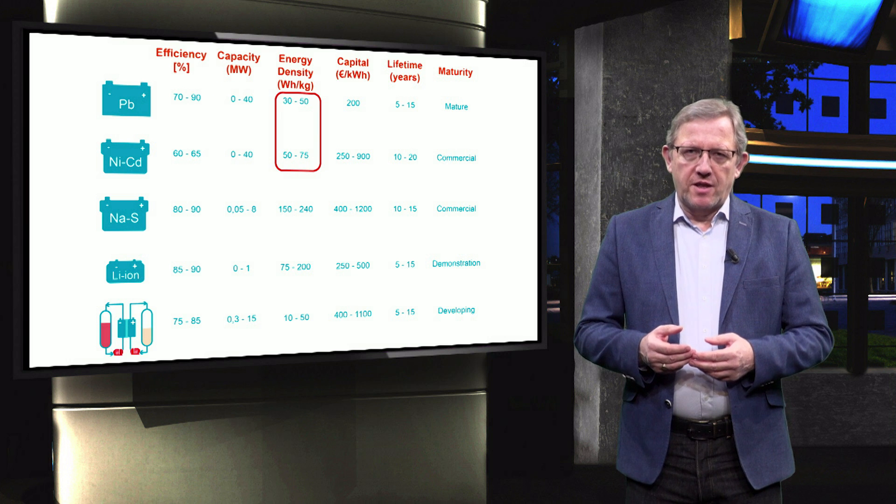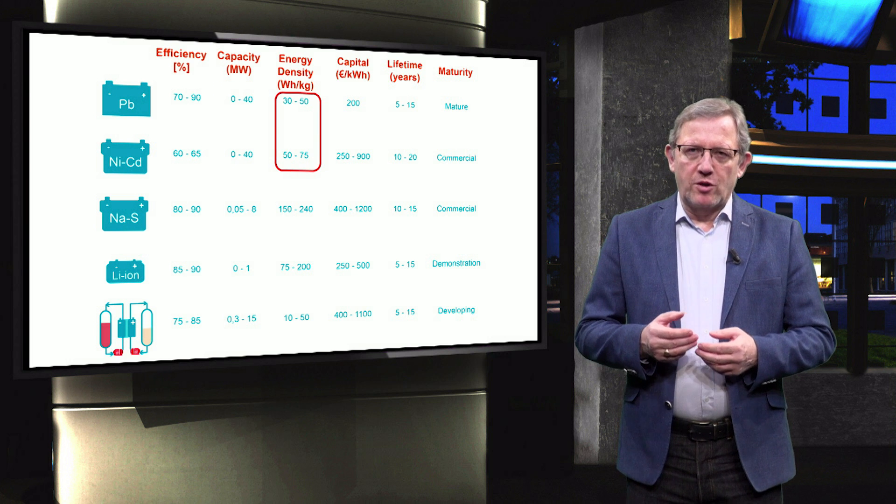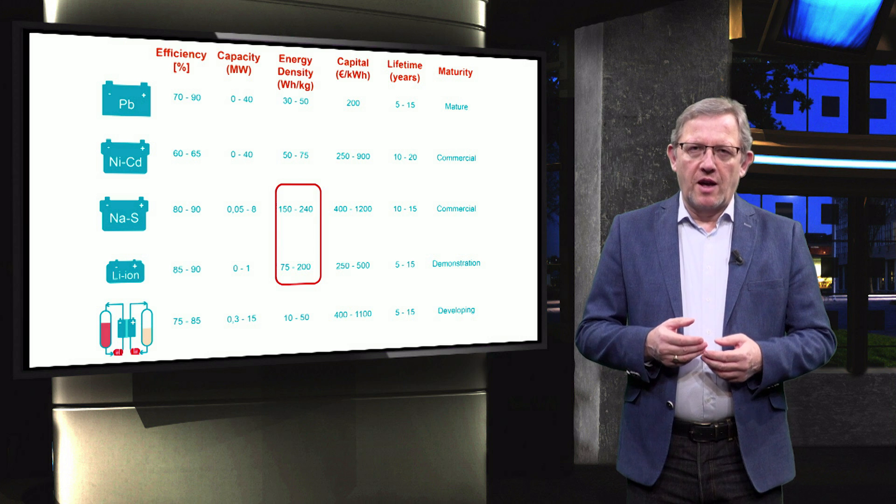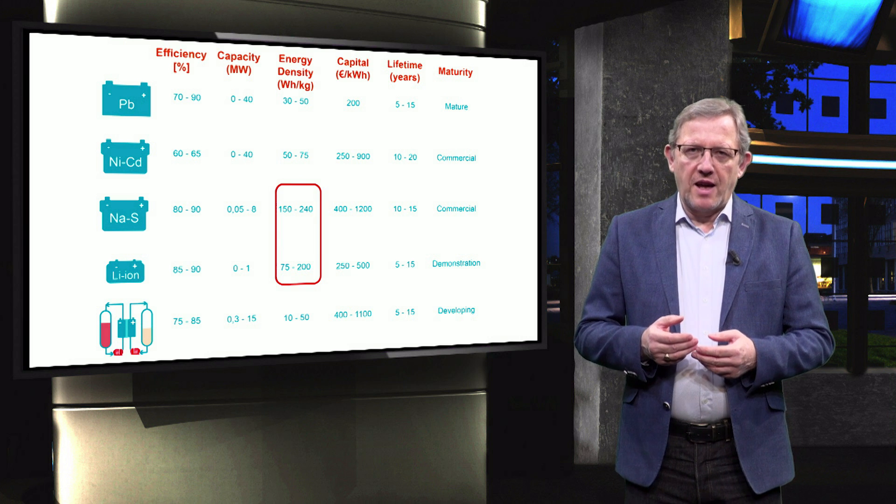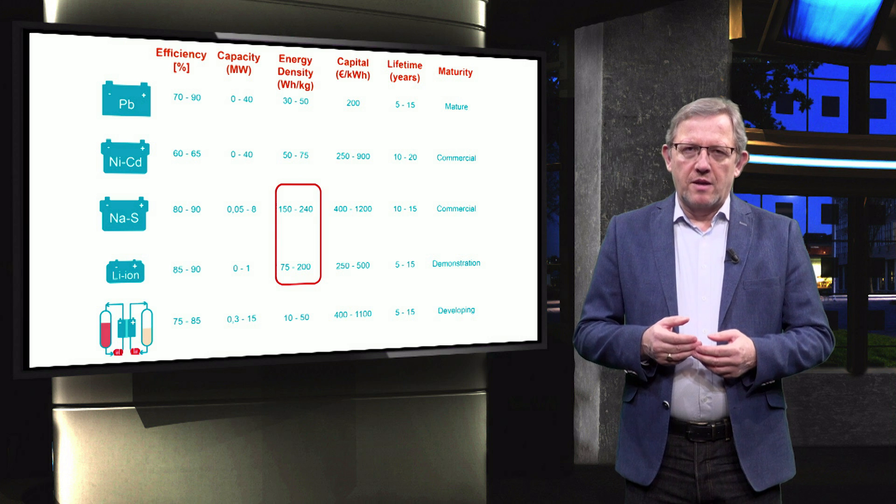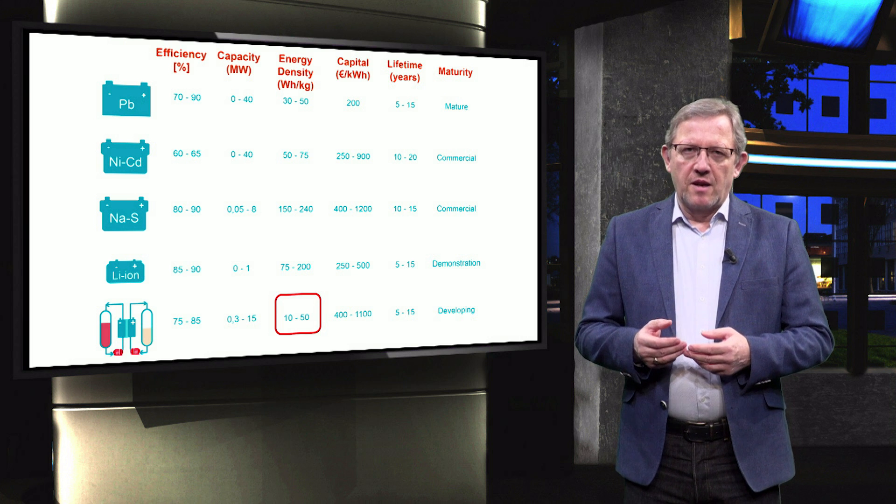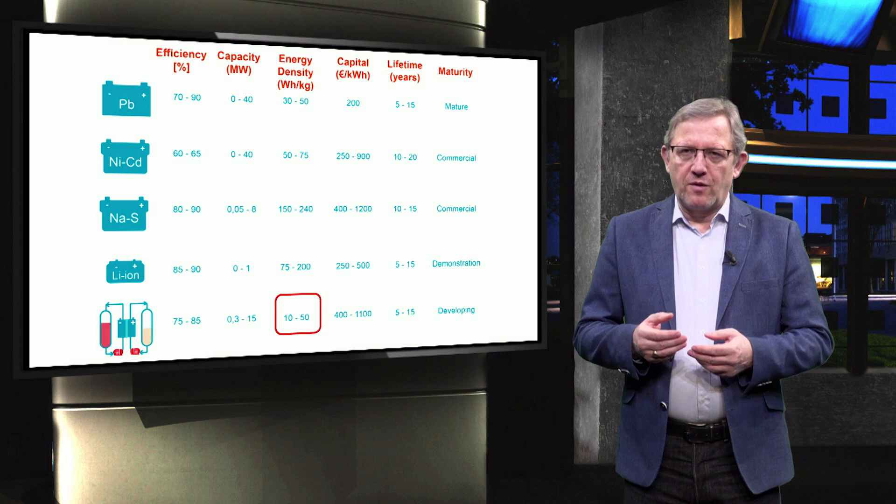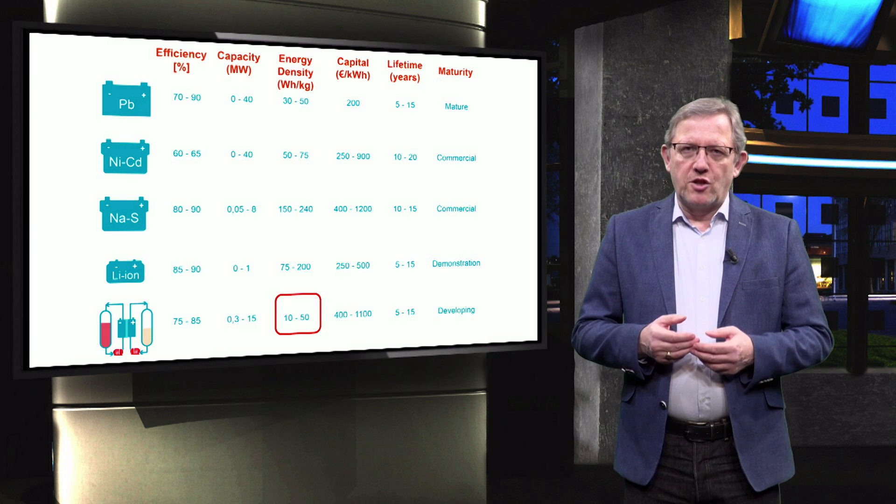Energy density of lead acid and nickel cadmium are moderate, while sodium sulfur and lithium ion batteries have a high energy density up to 240 watt-hour per kilogram. The energy density of flow batteries largely varies between 10 and 50 watt-hours per kilogram.